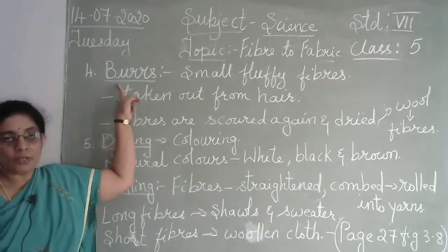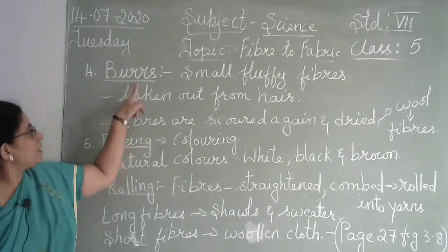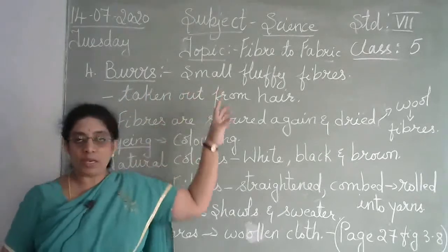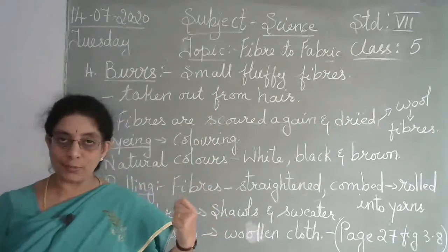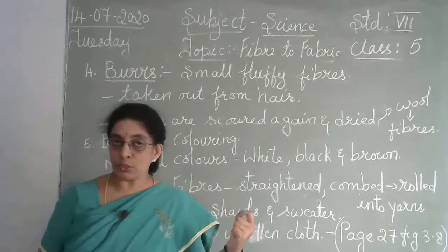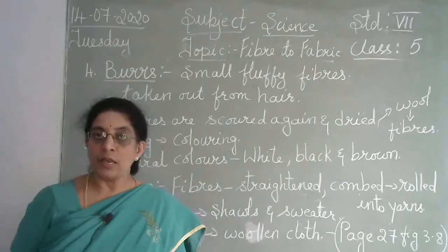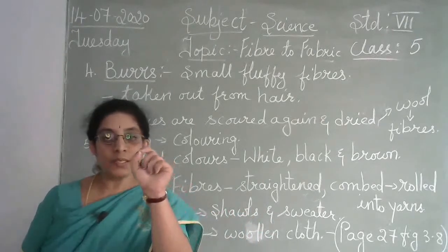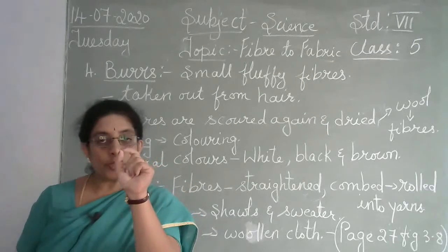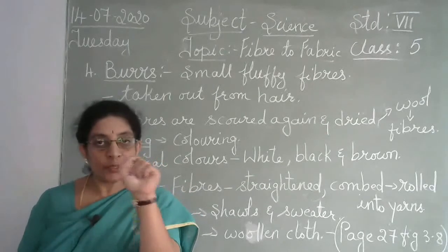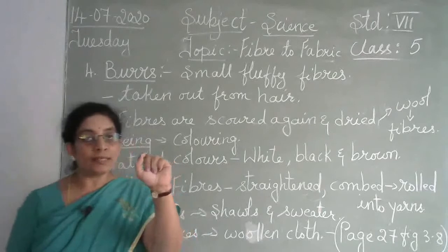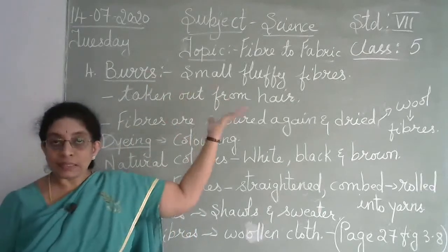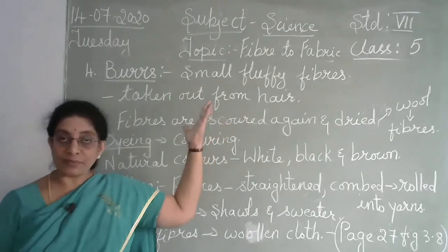The fourth step is removal of burrs. When you wear a sweater, after some use you can see small balls of wool on it — those are called burrs. After sorting, all these small fluffy fibers — the small balls of wool — are completely removed from the fiber.